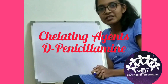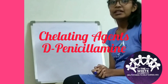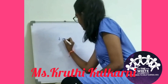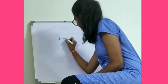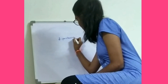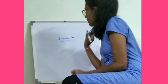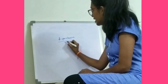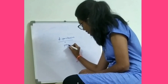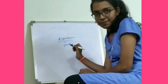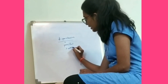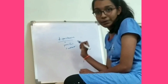Today we will discuss chelating agents, the first one being D-Penicillamine. D-Penicillamine is a degraded product of penicillin. It does not have antibacterial property.